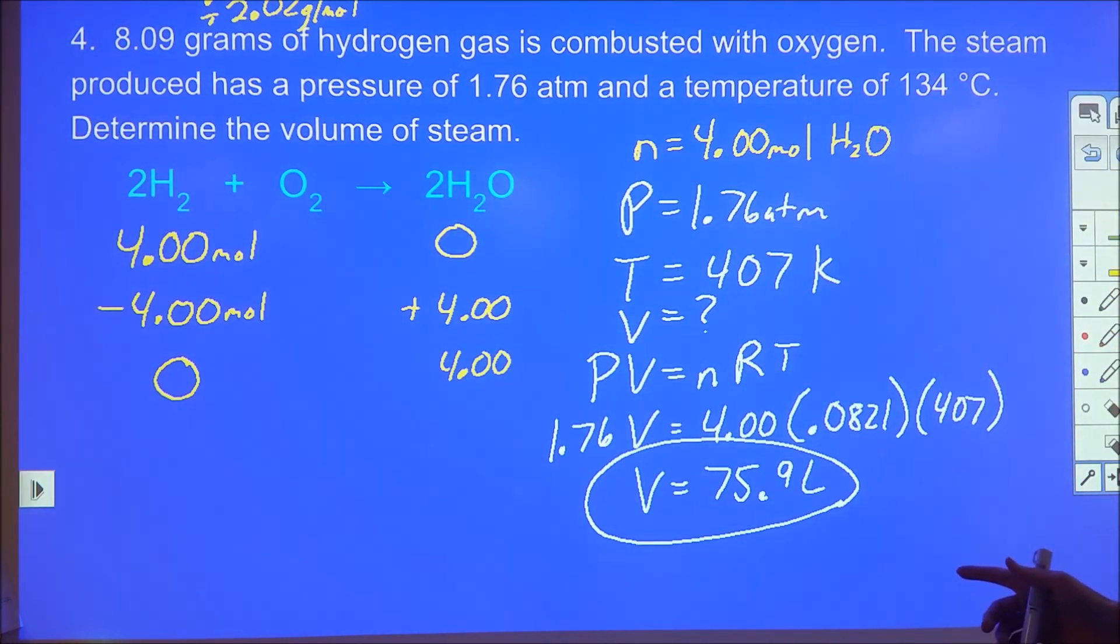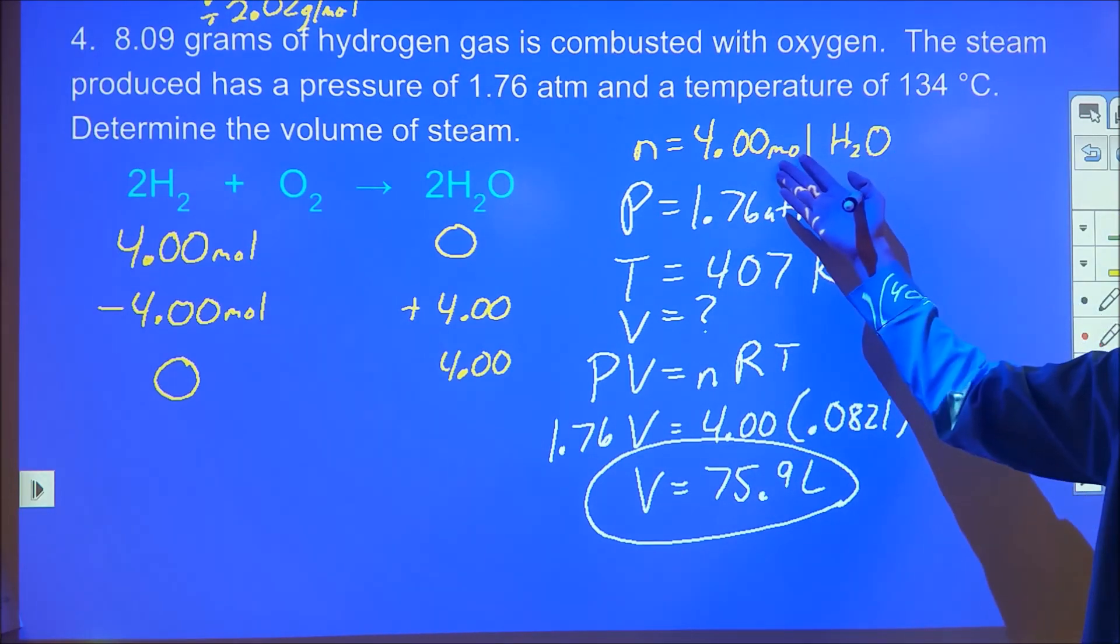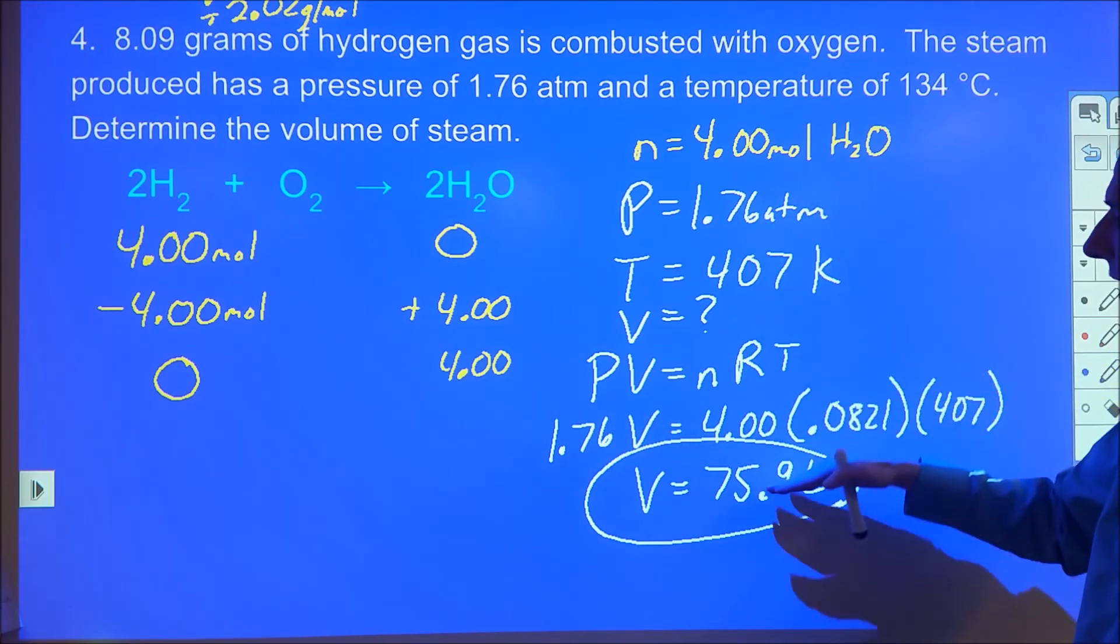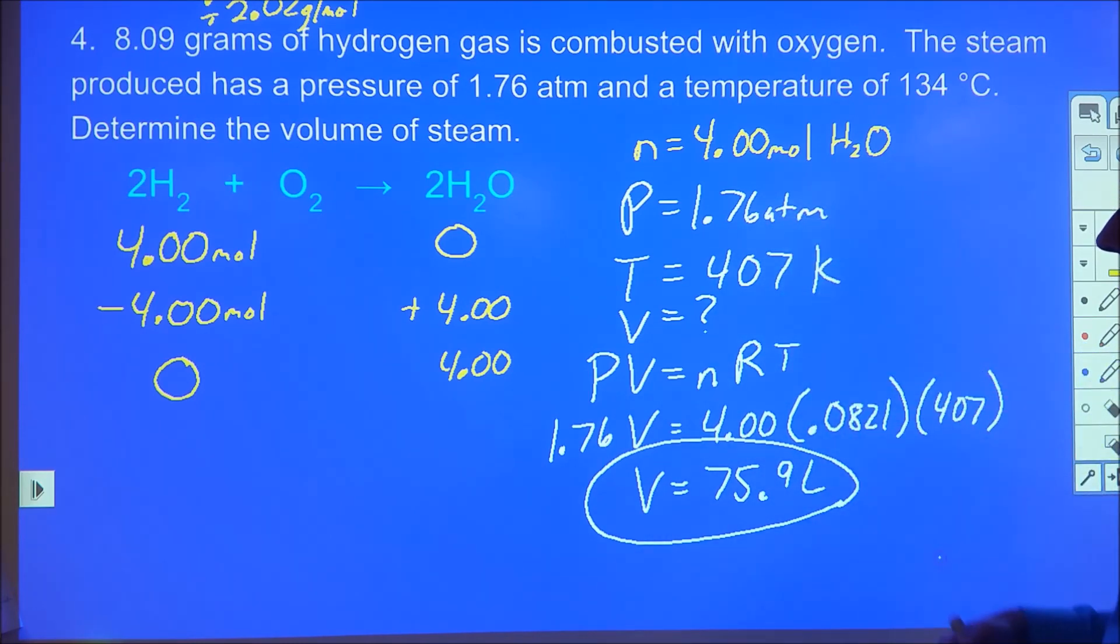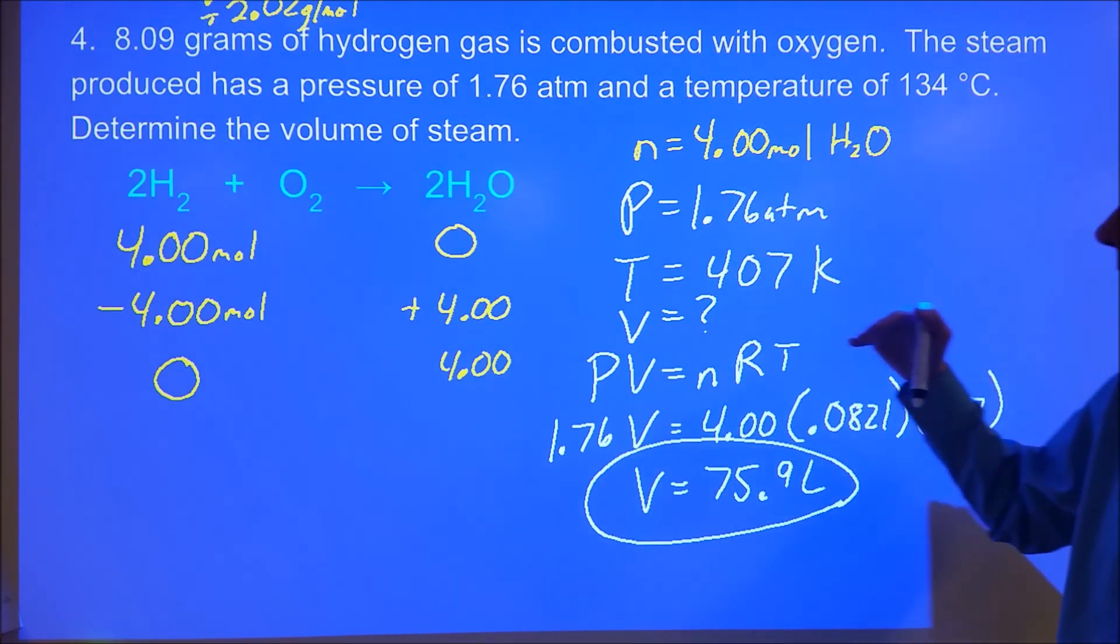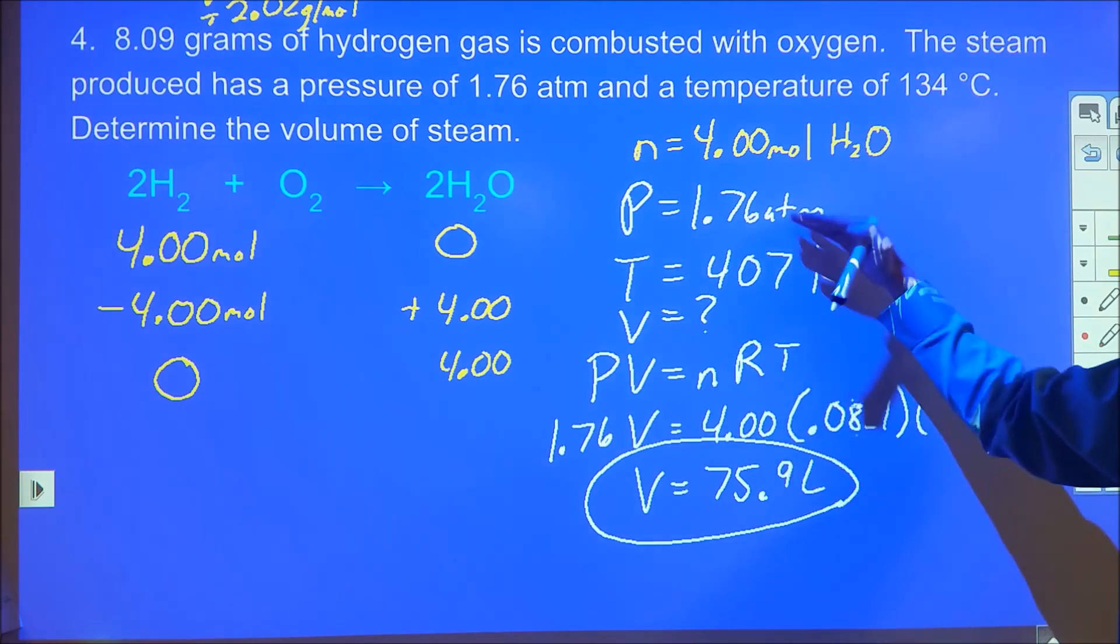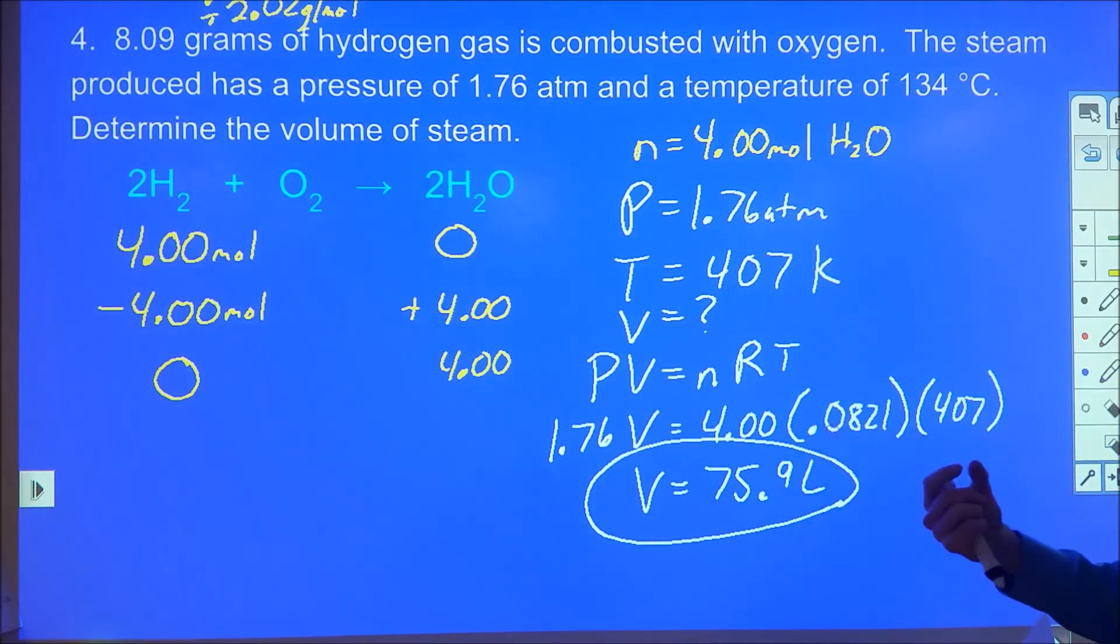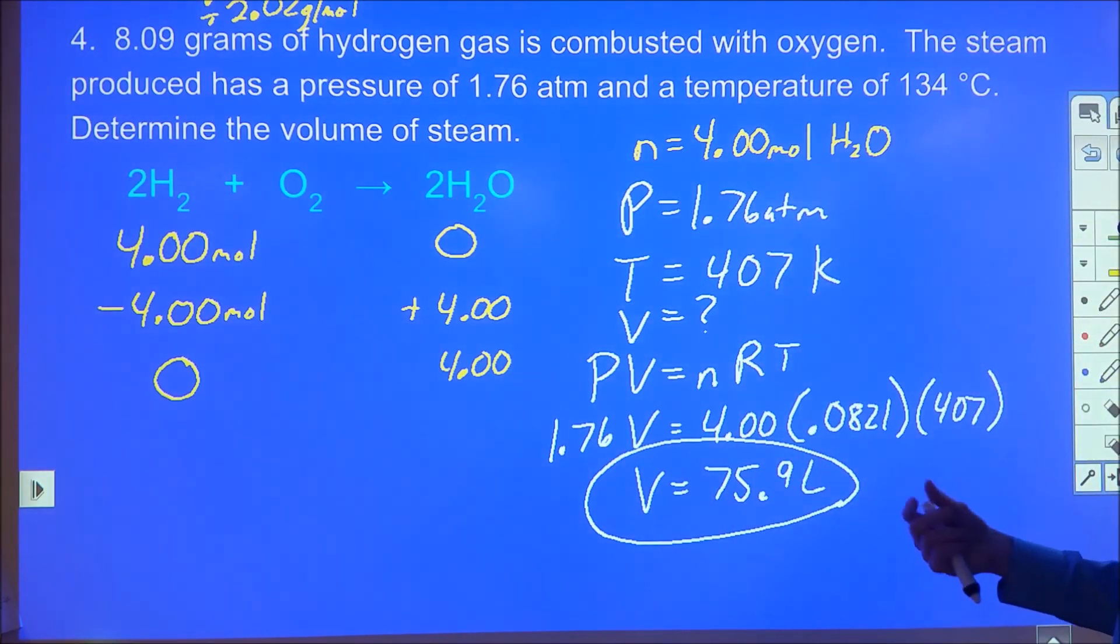That volume makes sense because we have four moles—at standard conditions we'd have about 89 liters. We're at almost double the pressure but also higher temperature, so it makes sense we're in that vicinity. What's important is connecting the idea of stoichiometry with these new levels of analysis, whether it's PV equals nRT, enthalpy changes, or solution chemistry, all combined with the recipe of the chemical reaction.